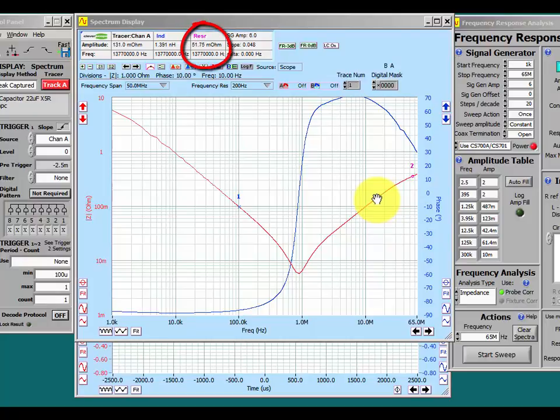We can also see the ESR. It's around 50 milliohms at the moment. In fact, right down here, it is at the self-resonant point. It's a matter of only about 5 milliohms or so. 5.8 milliohms.